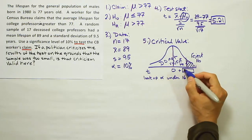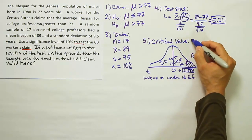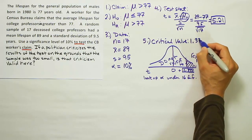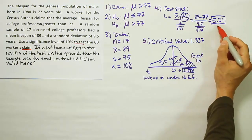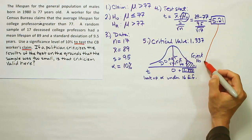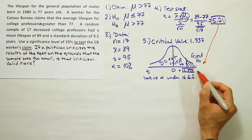We get the answer 1.337 for our critical value. Now that we have our critical value, it's time to compare that critical value to our test stat. If our test stat is larger than it, we'll be in the rejection region on the number line, and we'll be forced to reject H0. We see that this is over here on the number line. It'd be to the right of 1.337.